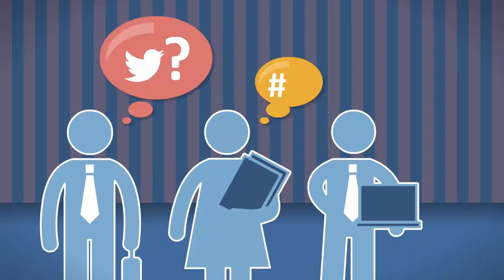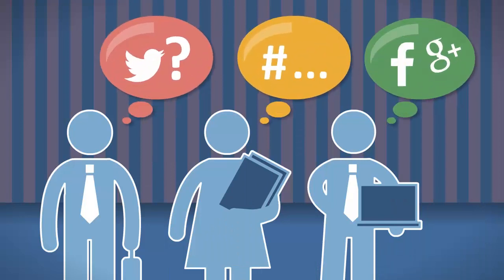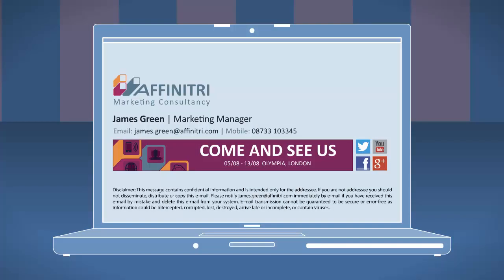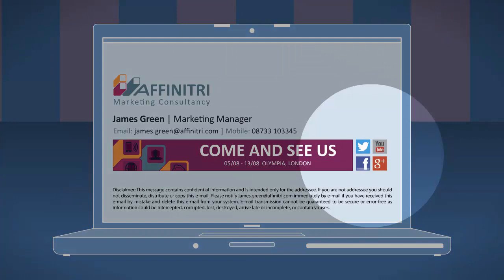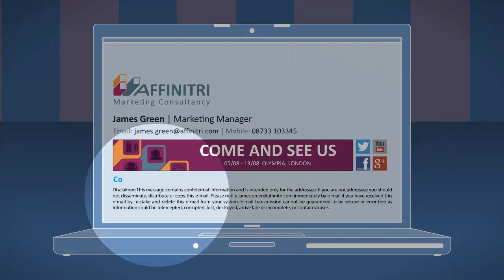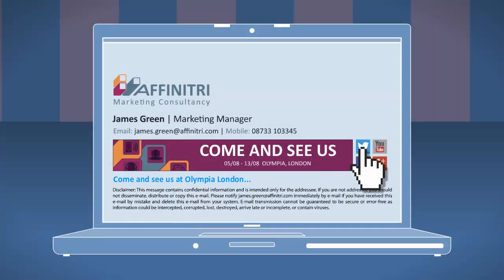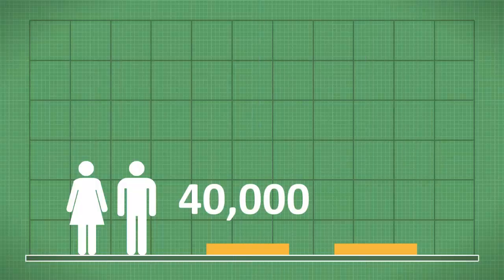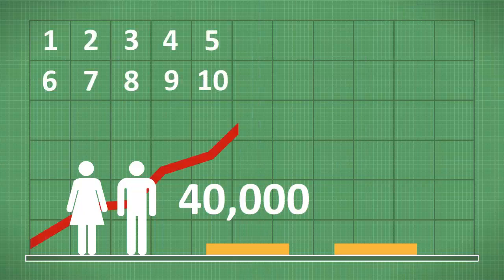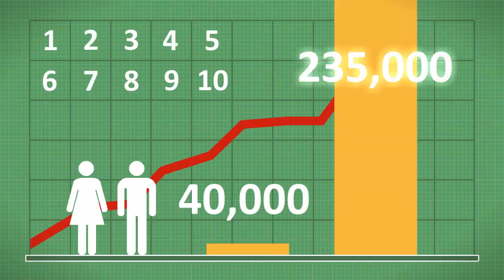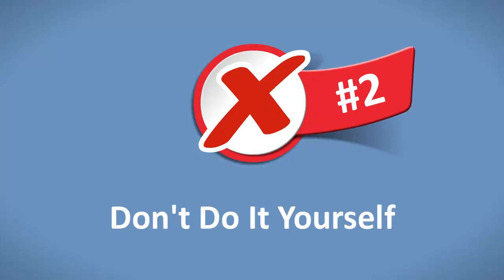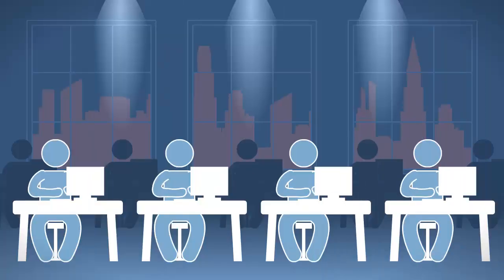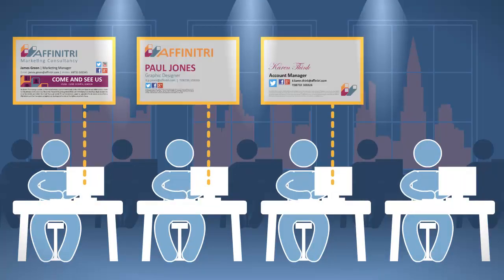Number one: do make it social. Social media is on the mind of every marketer right now. Use your signature to connect social with mail — give contacts a taste of your content and add a social media link. Unilever added a follow link and went from 40,000 followers to 235,000.